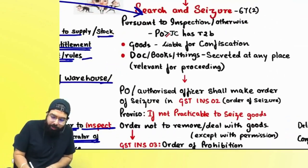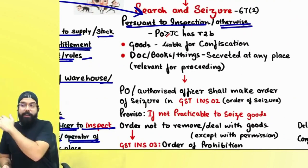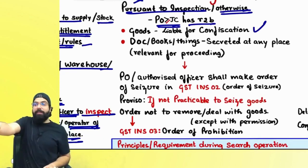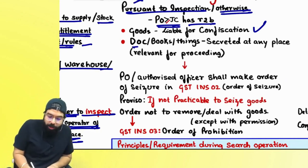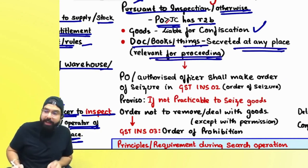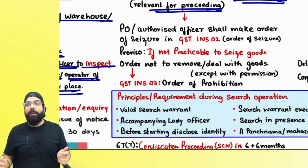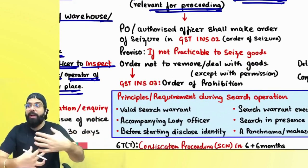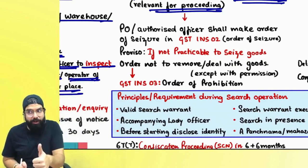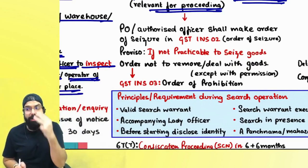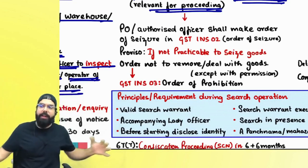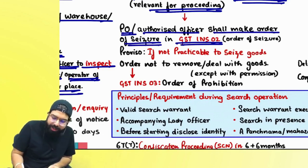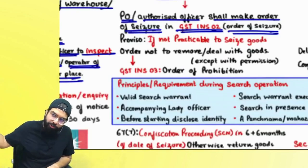After inspection, or if any other intelligence information is received, and the officer greater than or equal to joint commissioner has reason to believe that goods liable to be confiscated are in your premises, or documents, books, and things relevant for proceedings are being hidden — then a search team will be sent, search and seizure will be conducted. They will find goods liable for confiscation, documents, books and things which can be used against you, and take them along. The proper officer shall make an order of seizure in GST INS 02.